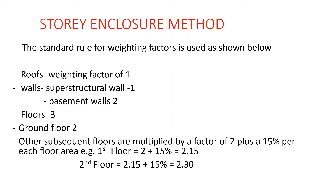The story enclosure method works with weighting factors. For the roof we have a weighting factor of one; superstructures, that is the walls, also have a weighting factor of one; basement walls have a weighting factor of two. For the floors: ground floor has a weighting factor of two, and subsequent floors are multiplied by a factor of two plus 15 percent per each additional floor area.